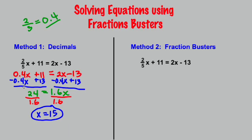And then once you've done that you can subtract 0.4x from both sides, add 13 to both sides. Now you get 24 equals 1.6x. You can divide by 1.6 and you get 15. So for most of you dealing with decimals would be your first choice. You would choose to avoid fractions.